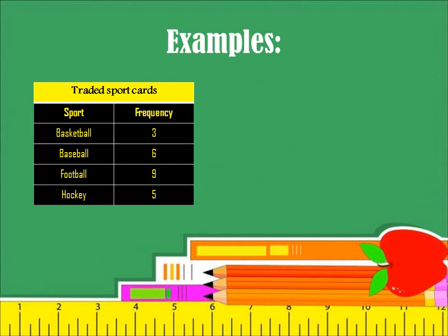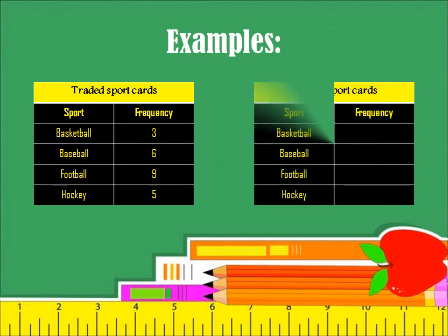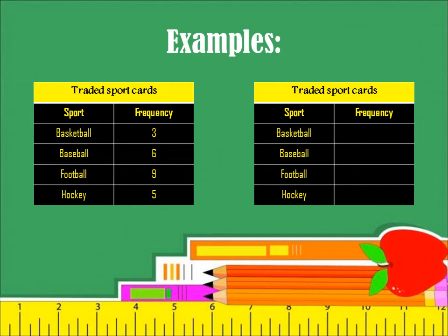Now we need to put them in a Tally Chart. We are going to have the same sports, the same table. The only thing that is different is the frequency. They are going to be the same numbers but we are going to write them with lines. For example, basketball is 3, so we are going to put 3 tallies: 1, 2, 3. These are 3 tallies.